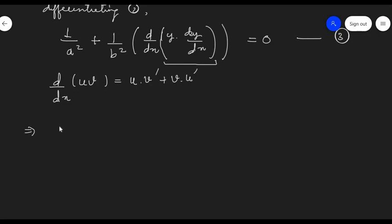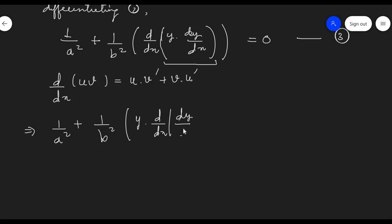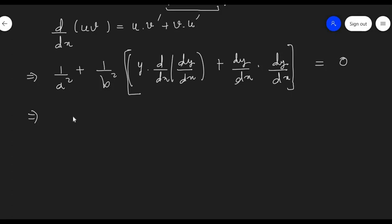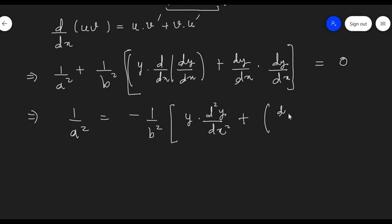Differentiating equation 2, we get 1 / a² plus (1 / b²) times — calling y as the first function and dy/dx as the second — we get y · d²y/dx² plus (dy/dx)² equal to 0. Let's call this equation number 3.